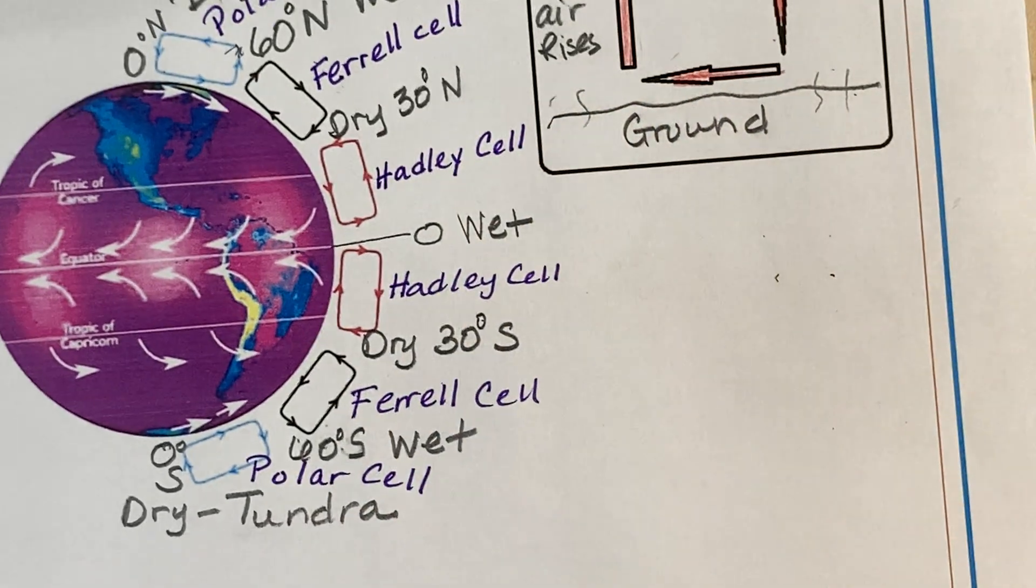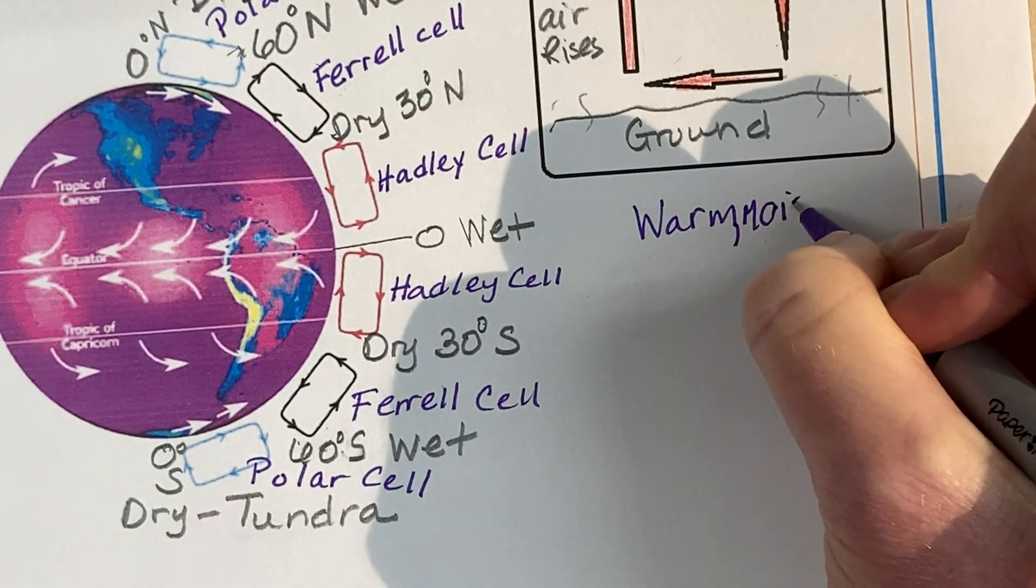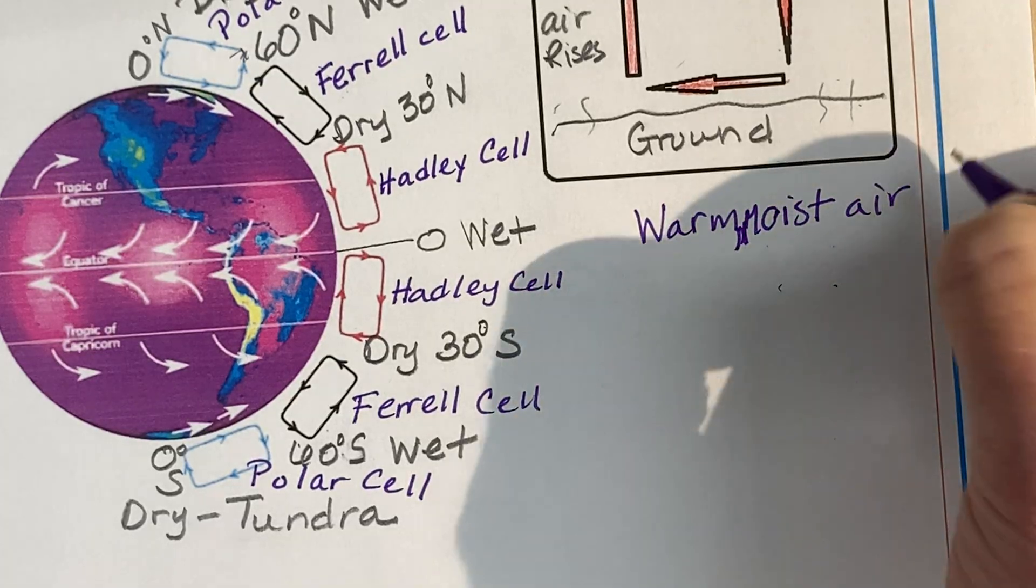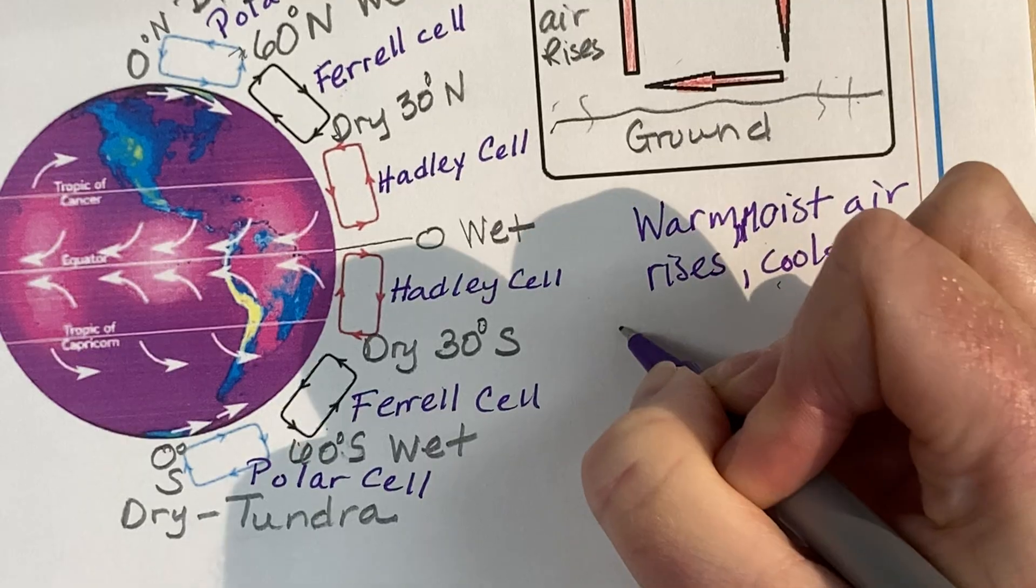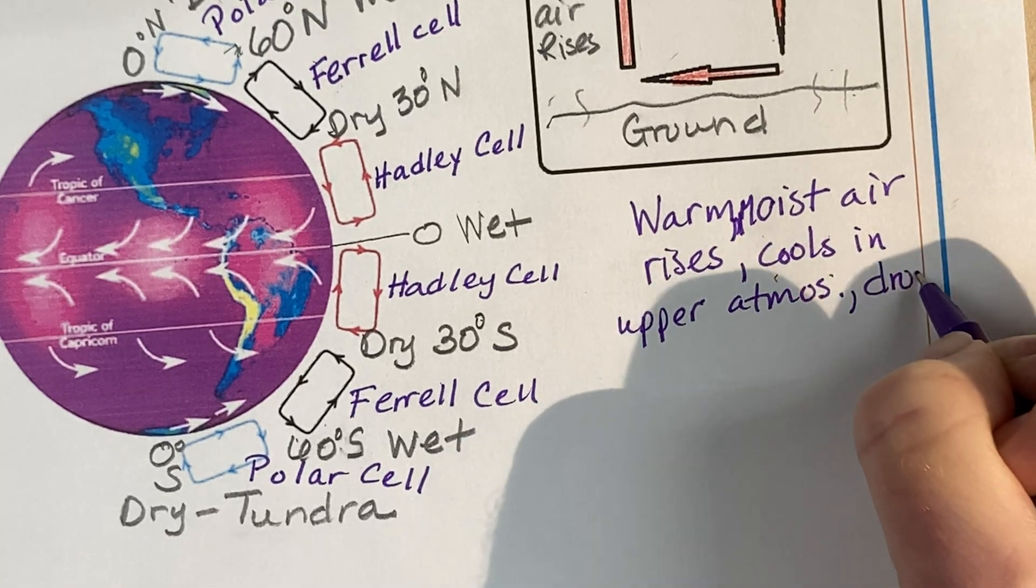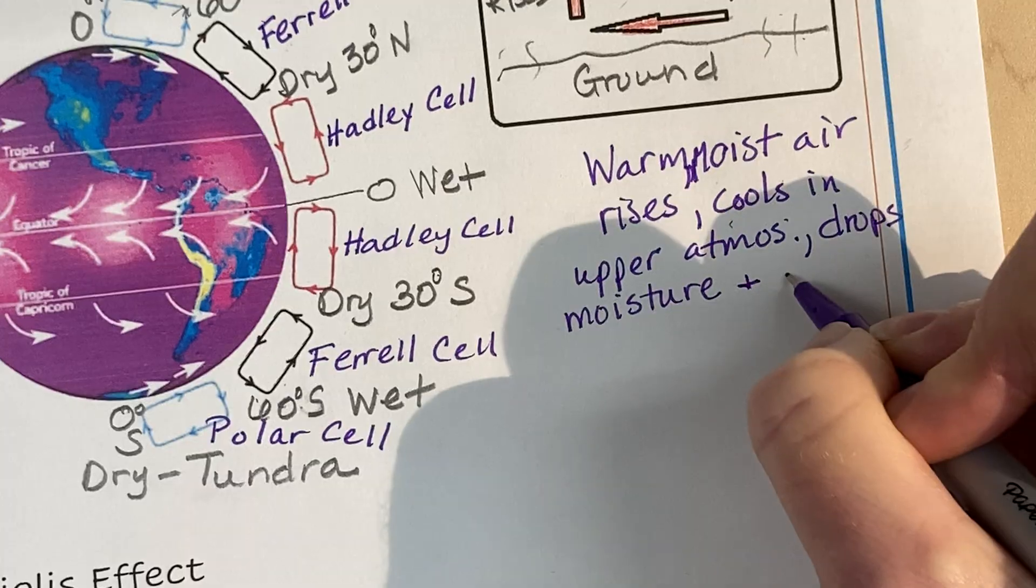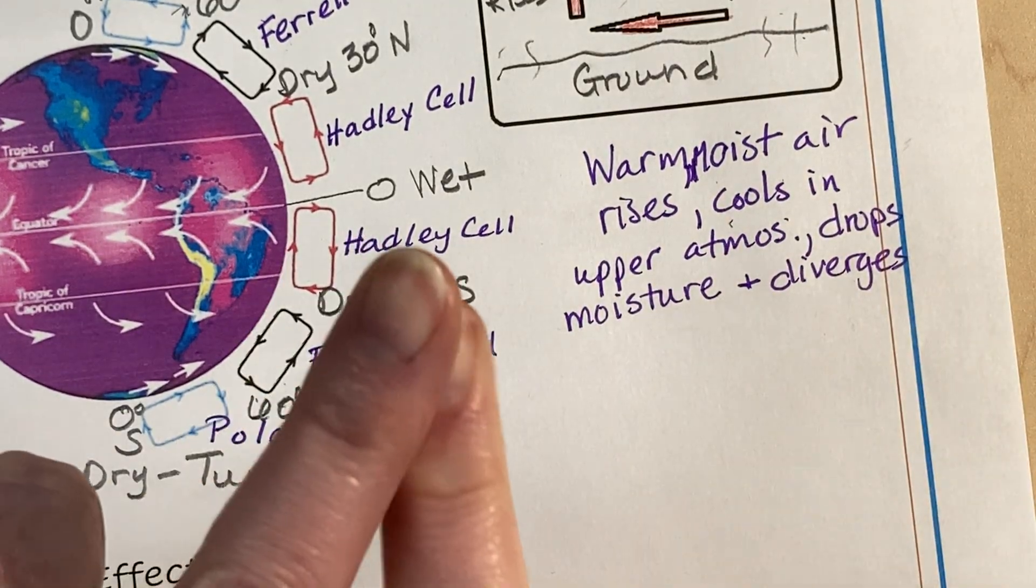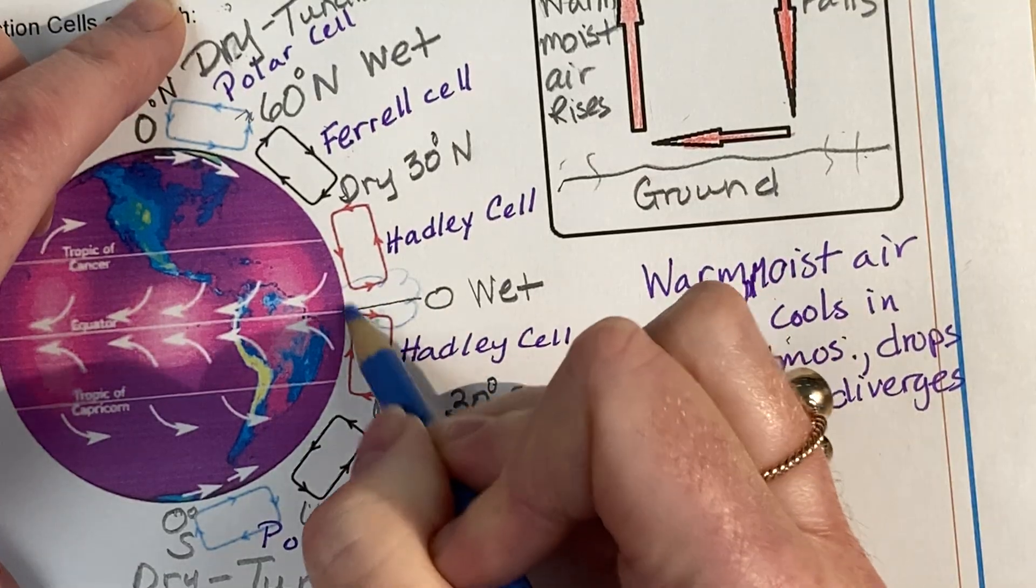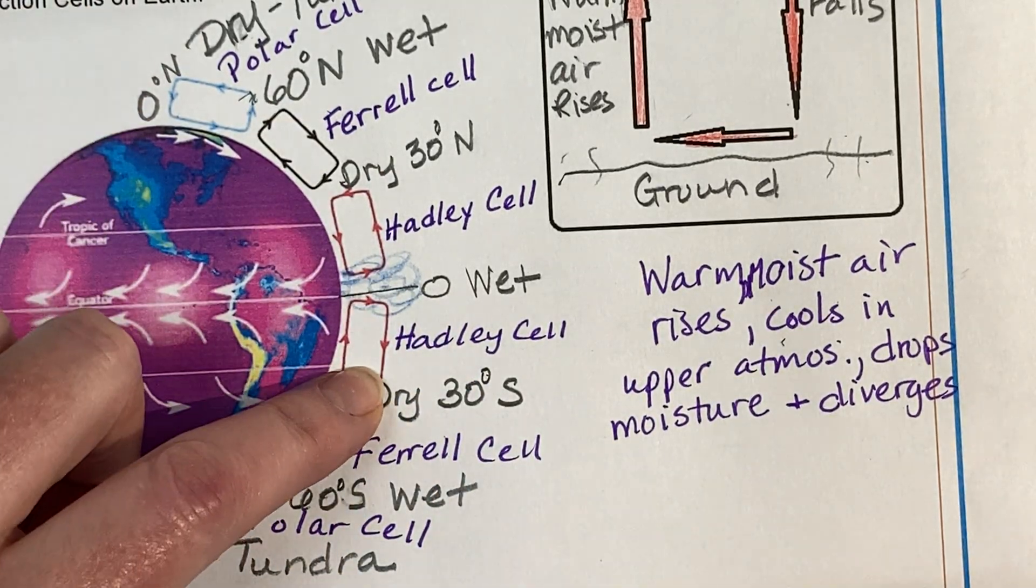So let's talk about convection again. This is really the definition of convection. Warm, moist air rises. Then it cools in upper atmosphere. And when it cools, it drops its moisture because cooler air can't hold as much moisture. And we say it diverges. Diverges means to break apart. So you can see, like here at the equator, it rises, it rains. We can put these rain clouds all in here. We have rain. And then it diverges. So it goes north and some of it goes south. That's what we mean by diverges.